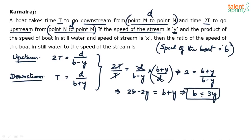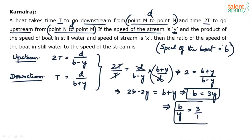So the speed of the boat is 3 times the speed of the stream — b equals 3y. The question asks for the ratio of the speed of the boat in still water to the speed of the stream, which is b / y = 3 / 1. The final answer is 3 : 1.